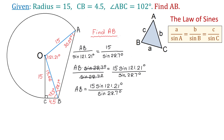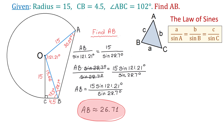Using a calculator in degree mode, we find that AB is approximately 26.71 units. So, we have found AB and the problem is now completed.